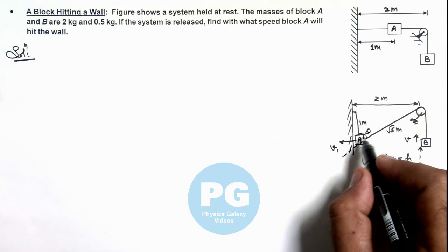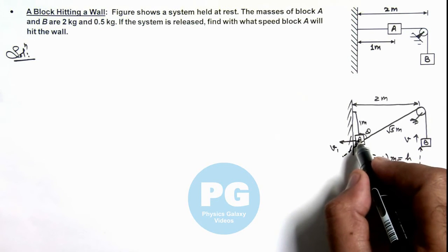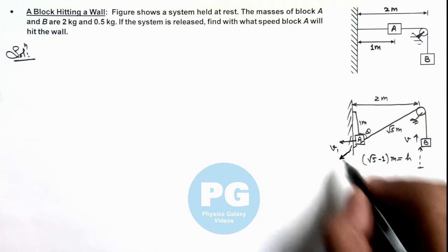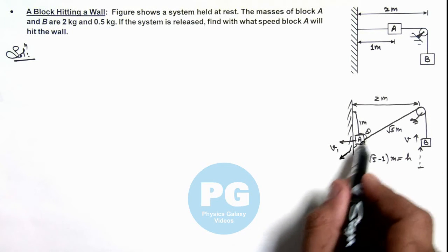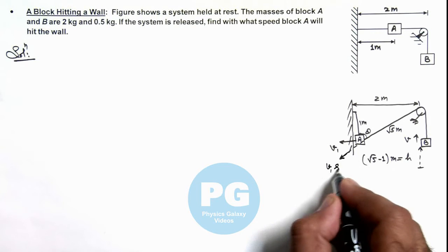Then here you can see, if this angle is theta, in this situation the speed with which block A would be moving along the length of string will be v1 sine theta.